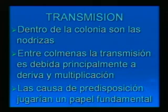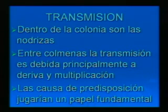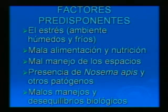Finalmente se forman escamas de color rojizo oscuro que son fáciles de extraer o se caen solas cuando se da vuelta el cuadro, que es otra diferencia con loca americana donde las larvas estaban muy fuertemente adheridas. La transmisión dentro de la colonia se da por las nodrizas cuando limpian las celdas de larvas enfermas y luego alimentan a larvas sanas. Entre colmenas, la transmisión se debe principalmente a deriva y multiplicación. Los factores predisponentes incluyen estrés, ambiente húmedo o frío, mala alimentación, mal manejo de los espacios, presencia de Nosema apis y desequilibrios biológicos.